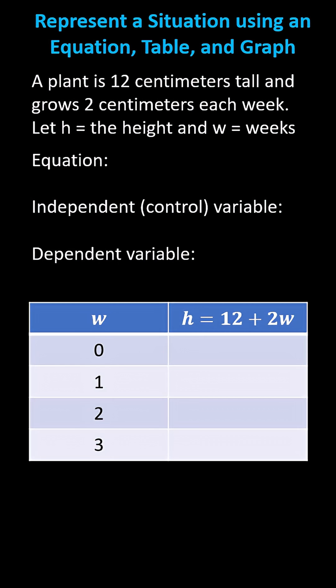We first want to write an equation for the height of the plant. Well, the height starts at 12 centimeters, and then it grows 2 centimeters each week, and therefore the height h is equal to 12 plus 2w.